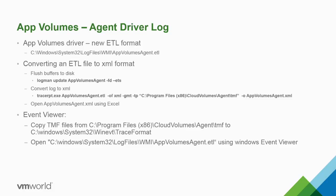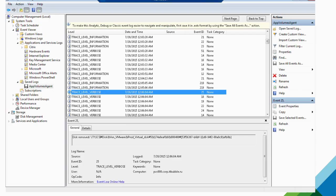The agent driver log is in ETL format as of version 2.9. We'll do more with this ETL format in the new consolidated console coming early next year. In the meantime, you can convert the ETL to XML using the documented steps, and then view it in Event Viewer for easier navigation.